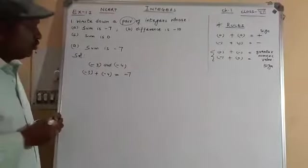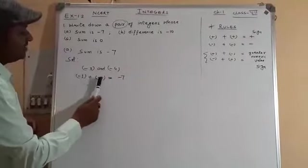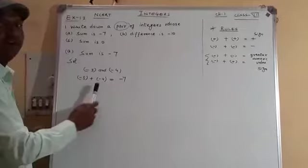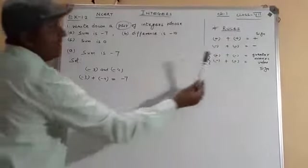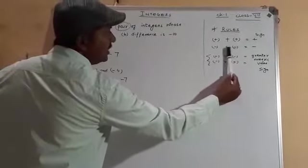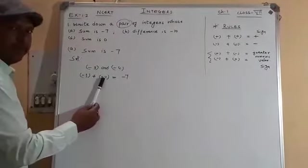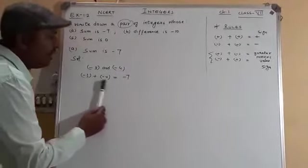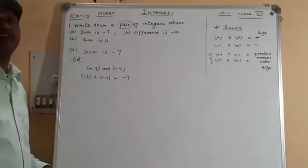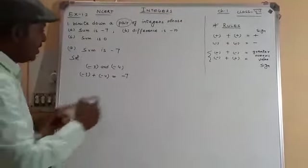What happened? Minus plus minus. Two same signs will be added. Three is minus sign, four is minus sign, and the result is -7.